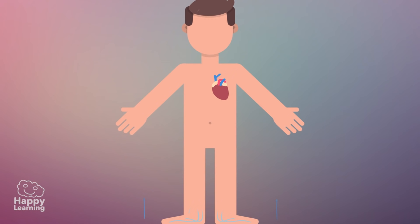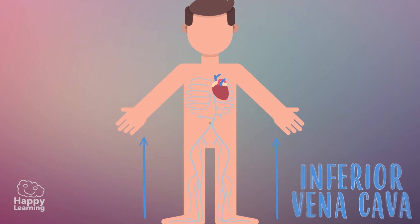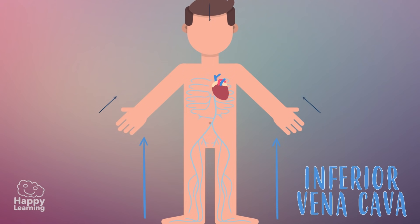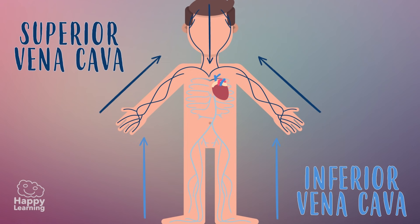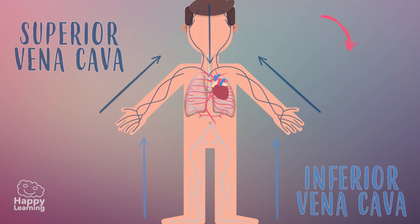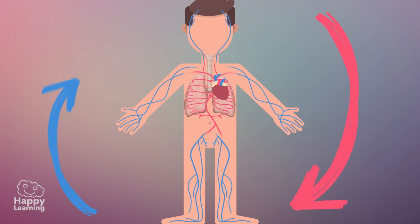The blood that returns from the lower part of the body flows through the inferior vena cava. The one that returns from the arms and head travels through the superior vena cava. All that blood reaches the lungs, where it gets oxygenated and returns back to the heart. There, the journey starts again.